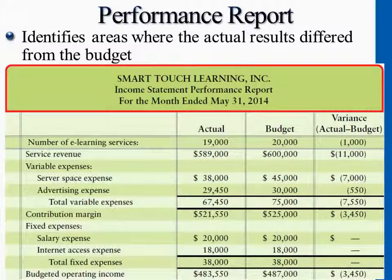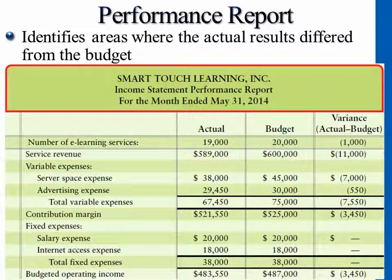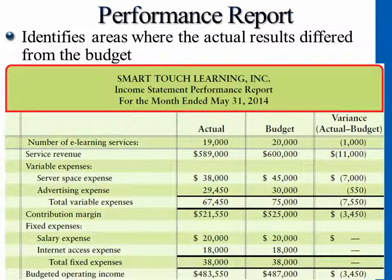Look at this. After doing budgeting, this is just a glance of what we're really looking at after learning this entire chapter. After carrying out the plan and comparing it against the budget, this is a performance report that later on we'll be learning how to do. Just by looking at this, what kinds of information can you tell from this?